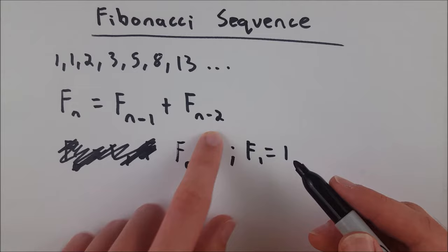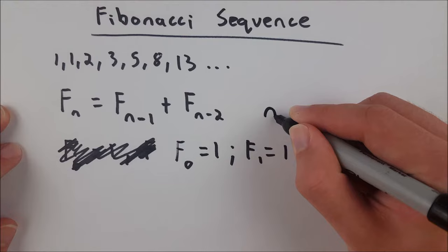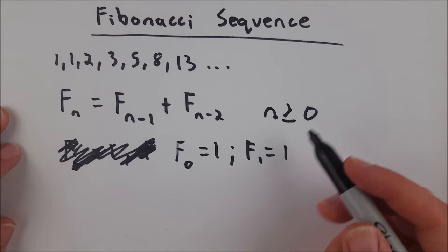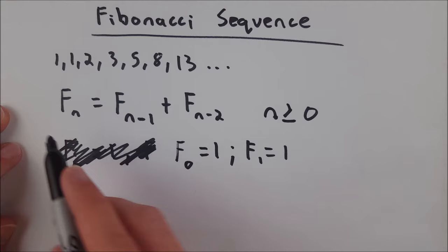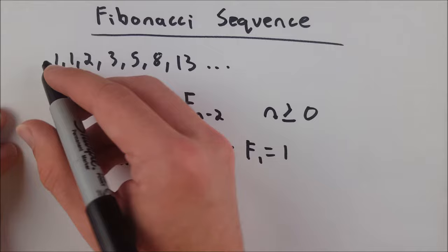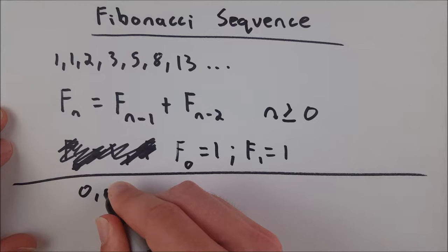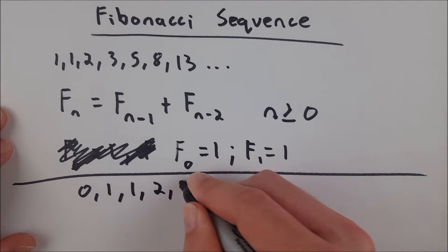We'd also say that n is greater than or equal to 0. If n equals 0, then our number is 1. If n equals 1, our number is 1. And from then on, we can use this relation right here. Now, sometimes the Fibonacci sequence is started with a 0. In that case, it's very similar, but it looks like this: 0, 1, and then you add the two previous numbers to get 1, and then 2, and so on. You're right back into the sequence as it appears above.